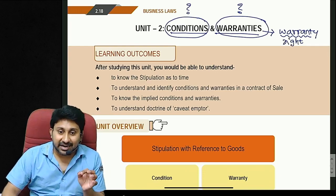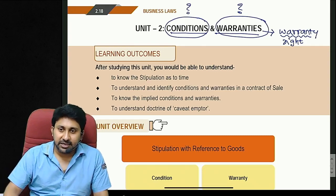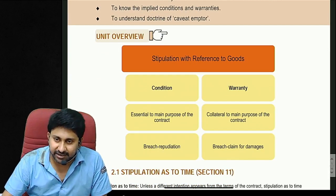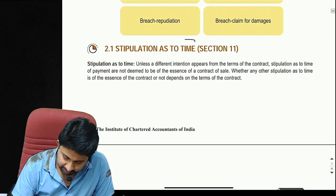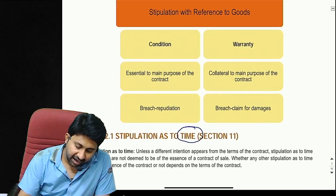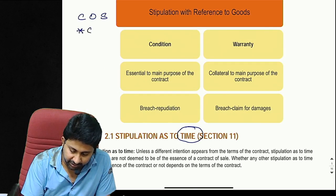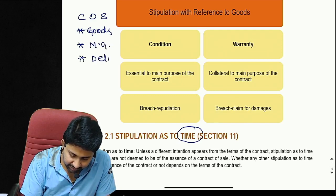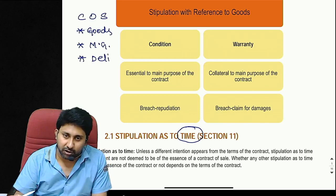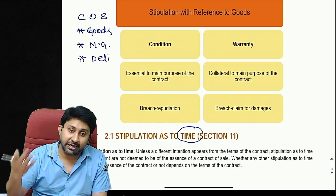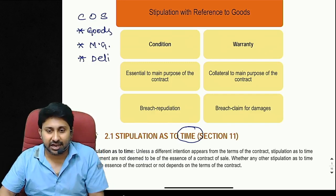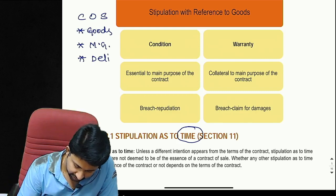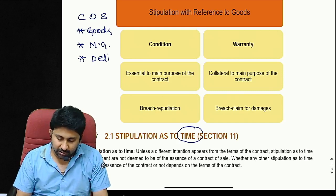For having a contract of sale, certain essentials must be present: there must be goods, and these goods must be movable. They must be deliverable — delivery can be actual, constructive, or symbolic. Goods can be future, present, or contingent; ascertained or unascertained. These concepts were covered in the previous lecture.